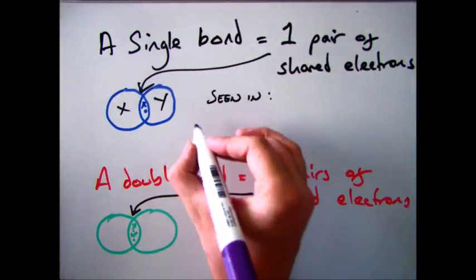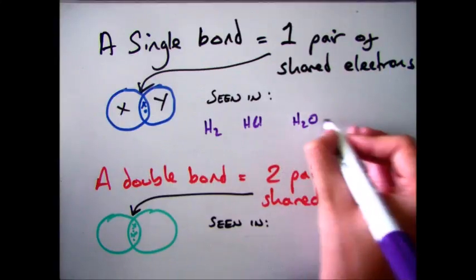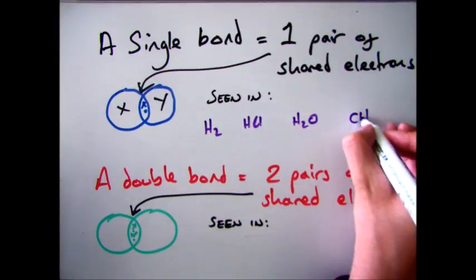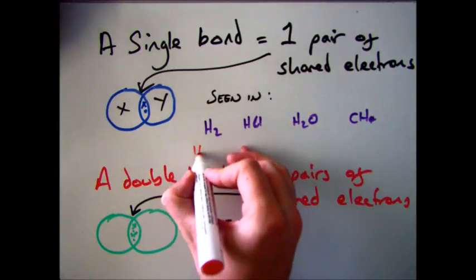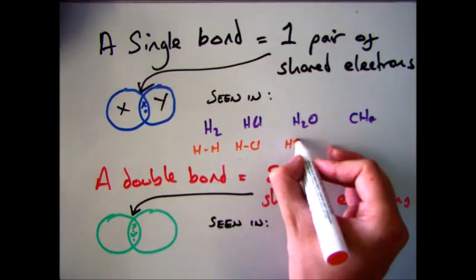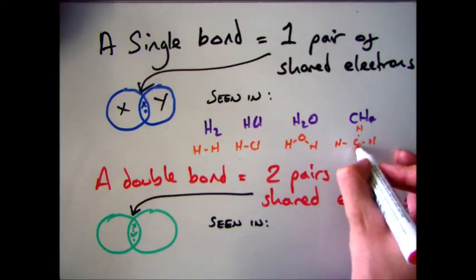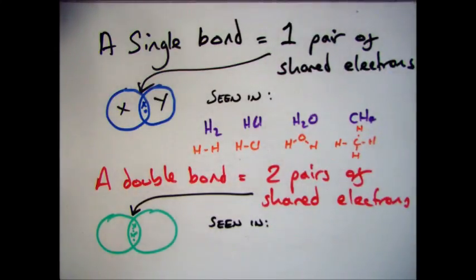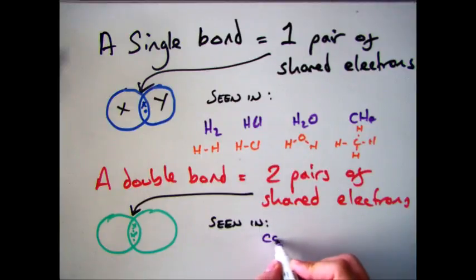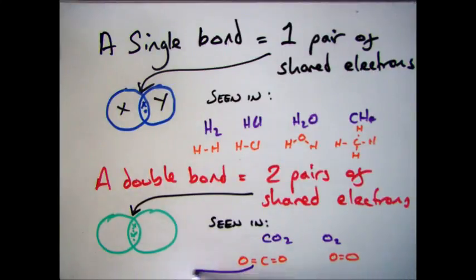Examples of single bond molecules are H2, HCl, H2O, and CH4 — they all have single bonds between them. The double bond ones you need to know are carbon dioxide CO2 and oxygen O2. For CO2 you have two double bonds either side of the carbon, and for oxygen, one double bond in between the two atoms.